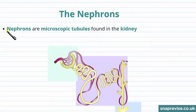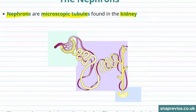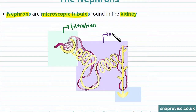The kidney also has nephrons. These are microscopic tubules found in the kidney that help maintain water balance, and each kidney has around a million nephrons. This diagram shows a single nephron. Filtration happens in this first part here, and the second part is involved in reabsorption, or water regulation.